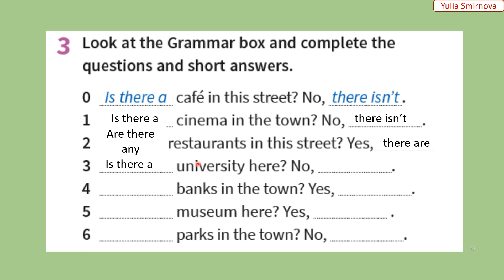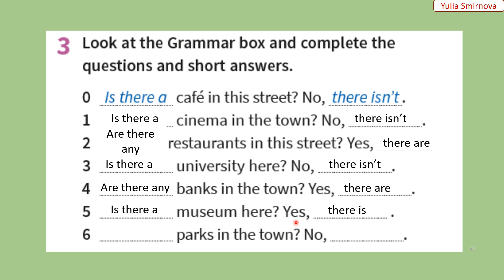3. Is there a university here? No, there isn't. — Чи є тут університет? Ні, немає. 4. Are there any banks in the town? Yes, there are. — Чи є банки у місті? Так, є. 5. Is there a museum here? Yes, there is. — Чи є тут музей? Так, є. 6. Are there any parks in the town? No, there aren't. — Чи є парки у місті? Ні, немає.